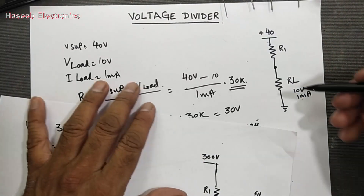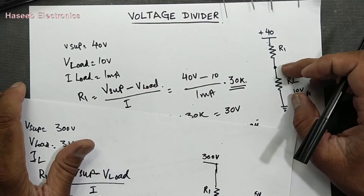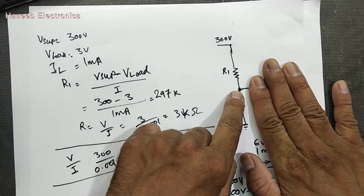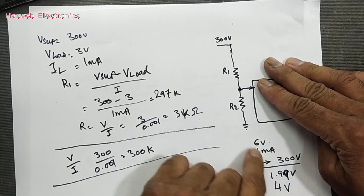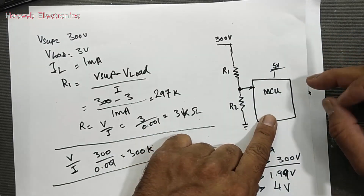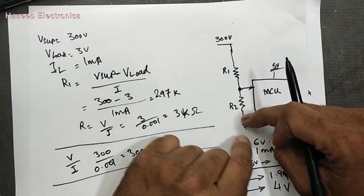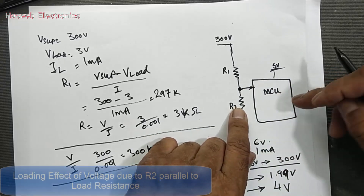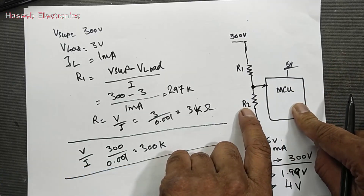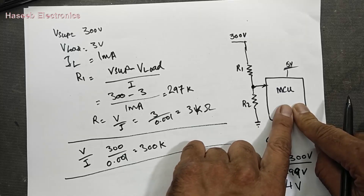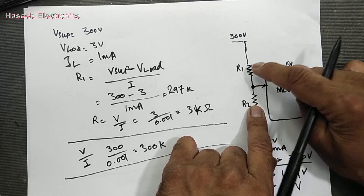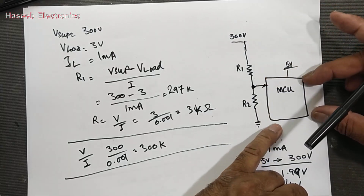There is one drawback: if the MCU pin comes in parallel with R2, it causes the voltage to drop slightly, because two resistors in parallel reduce the total resistance. We first calculate the load resistance and the shunt resistance — two resistors in parallel are calculated as one equivalent resistor. That equivalent resistor comes in series with R1, and then we take the fixed output voltage that we need.